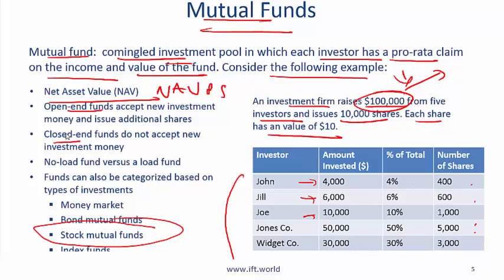You can have open-end funds and closed-end funds. Open-end funds accept new investments and issue additional shares — additional investors can put in more money and the fund issues more shares; these are sometimes called evergreen funds. A closed-end fund does not accept new money after shares are issued, so those shares only trade in the secondary market. If an investor wants to exit, they must sell their shares on the secondary market.